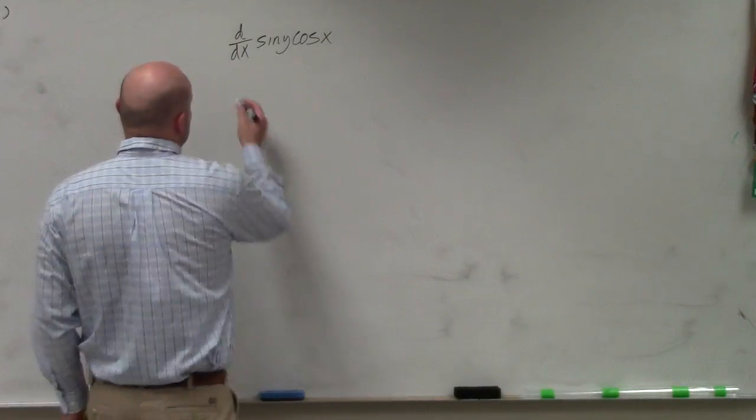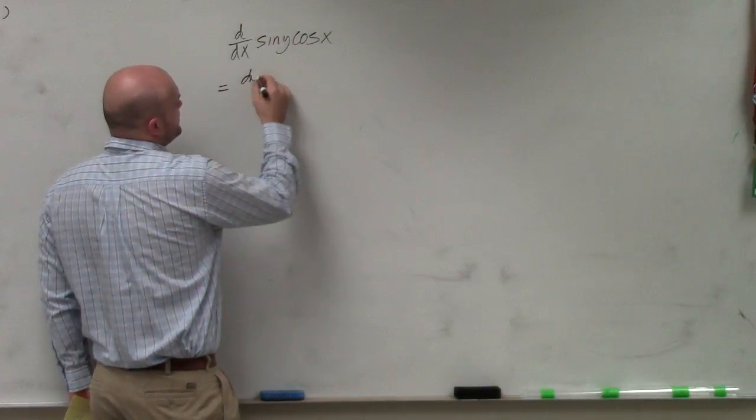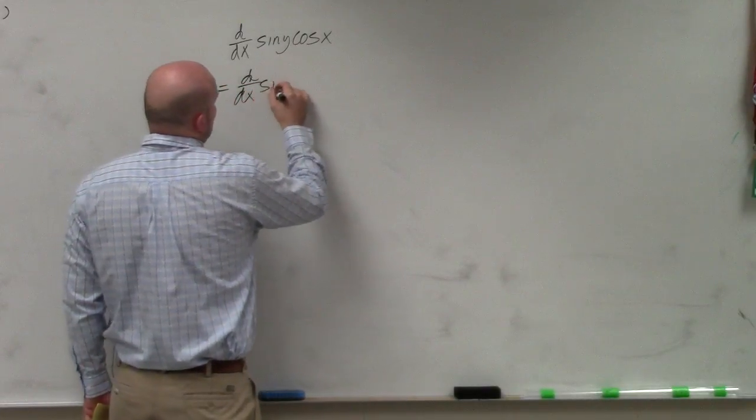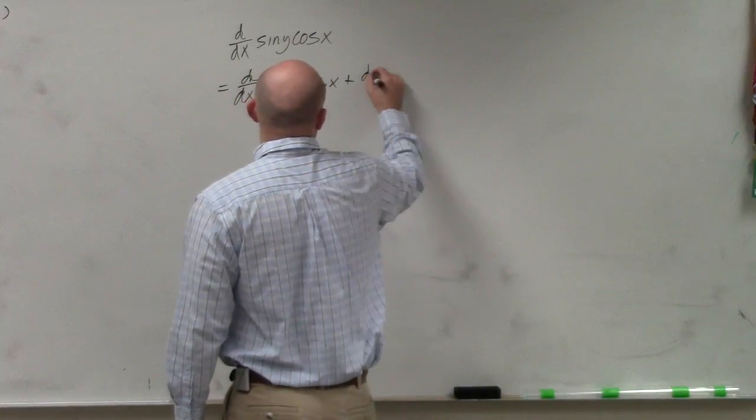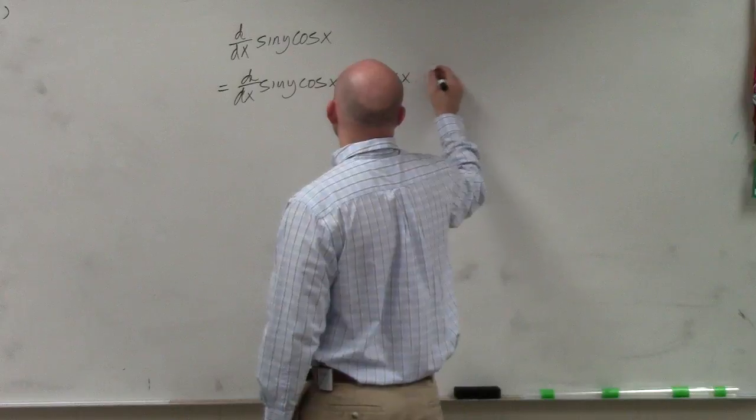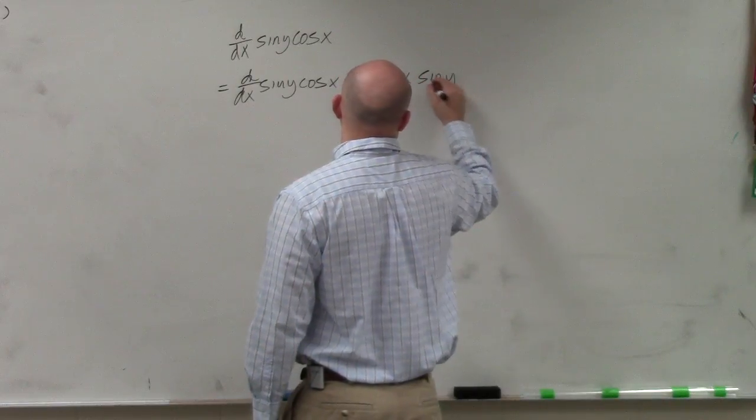So again, just looking at this as far as the chain rule, I'm basically doing d over dx of sine of y times cosine of x plus d over dx of cosine of x times the sine of y.